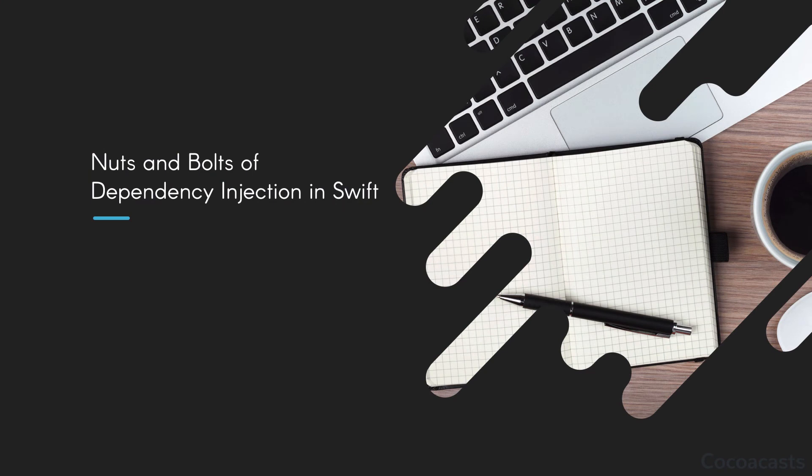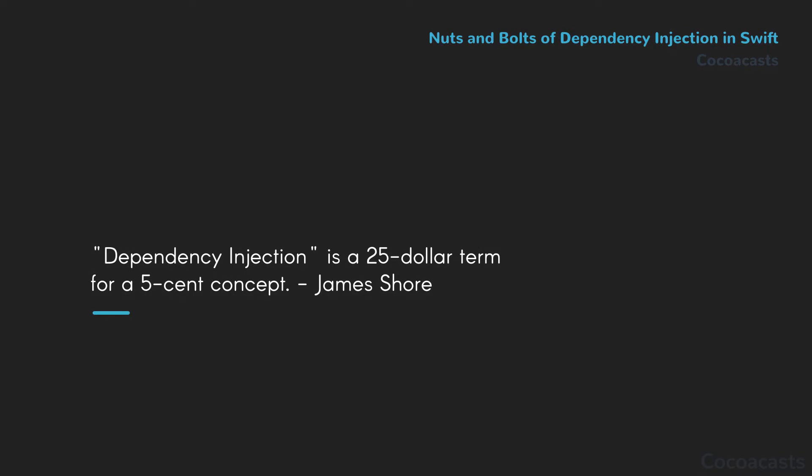My favorite quote about dependency injection is a quote by James Shore. It summarizes much of the confusion that surrounds dependency injection: 'Dependency injection is a $25 term for a five cent concept.' When I first heard about dependency injection, I figured it was a technique too advanced for my needs at that time — I could do without dependency injection, whatever it was.